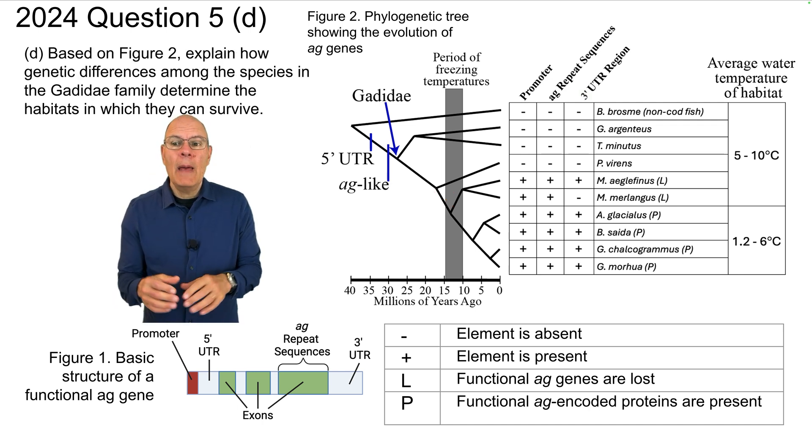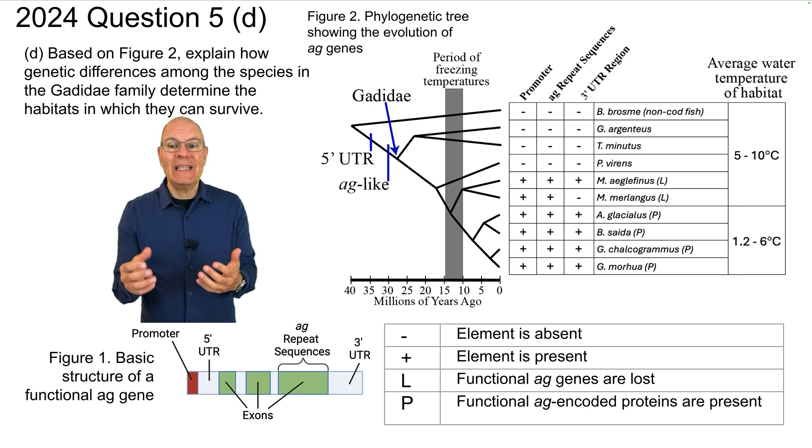Question 5d. Based on figure 2, explain how genetic differences among the species in the Gadidae family determine the habitats in which they can survive. Hit pause, write your answer, hit play to see my answer.